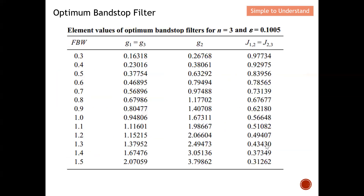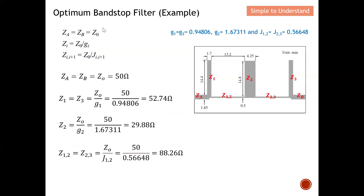Applying the formulas: since this is a symmetric filter, Z1 equals Z3 and Z12 equals Z23. Z1 is calculated as Z0 divided by g1, which is 50 divided by 0.94806, giving Z1 equals Z3 equals 52.74 ohms. For Z2, using Z0 divided by g2, which is 50 divided by 1.67311, giving Z2 equals 29.88 ohms.